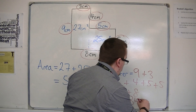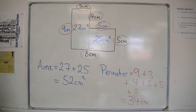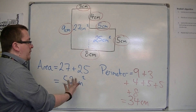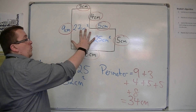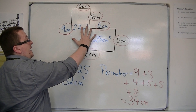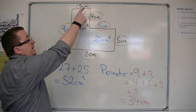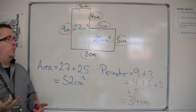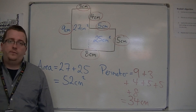So thirty-four centimetres. The area is measured in centimetres squared because it represents what is inside — square centimetres, the area inside. The perimeter is measured in centimetres in this case because it is a length. And that is how we work out the area and perimeter of a compound shape like this.